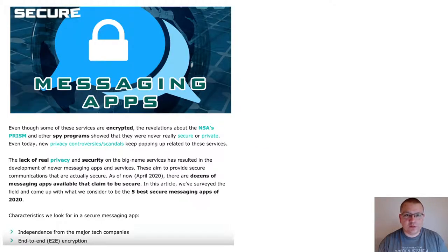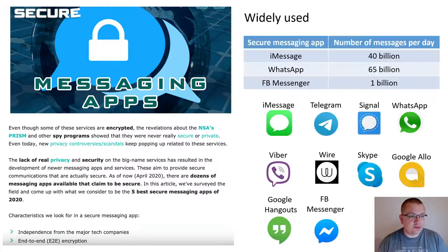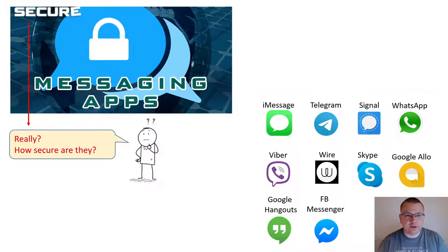In the wake of us learning about the existence of NSA's PRISM program, the security of private messengers has been put in the spotlight. Nowadays the instant messengers are very widely used, and a number of them claim to provide end-to-end encryption. The question we want to answer is: are these instant messengers really secure, and how secure are they?